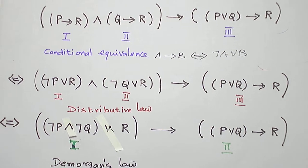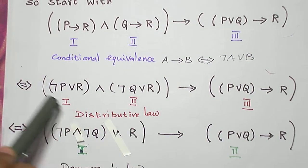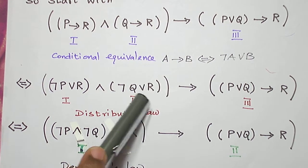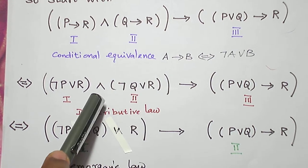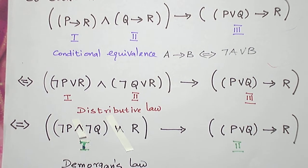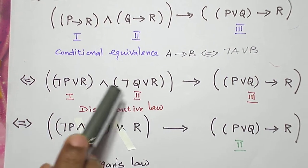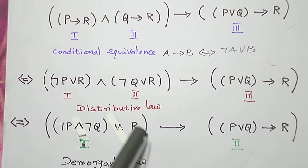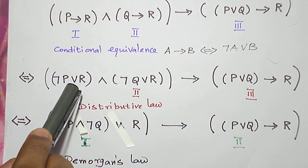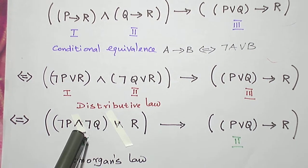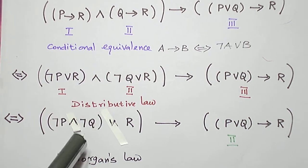Now to go to the next step, let me take this as the first term and this as the second term. I am going to simplify the first and second terms. Look at the connectives inside and outside the bracket — inside we have OR, outside we have AND. Since we have different connectives, we shall apply the distributive law. R is common, so let me take R in common: the inside connective comes outside and the outside connective comes inside.